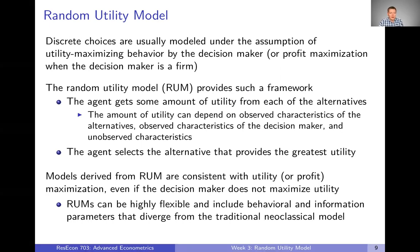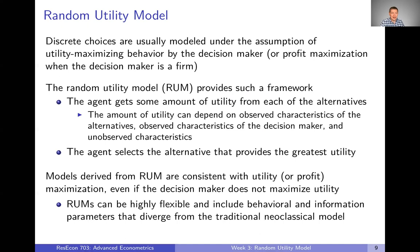The setup here is that discrete choices are usually modeled under the assumption of utility maximizing behavior by the decision maker. Sometimes we're going to be thinking about firms and profit, in which case we're going to be thinking about a profit maximizing firm instead of a utility maximizing agent, but basically everything that follows is going to be similar. The random utility model gives us a framework to think about how a decision maker makes a utility maximizing choice over a discrete set of alternatives.